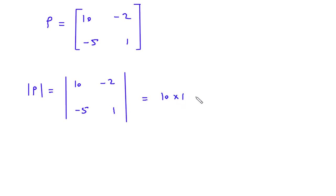10 into 1 in one bracket minus minus 2 into minus 5 in another bracket. So this will be 10 into 1, 10.